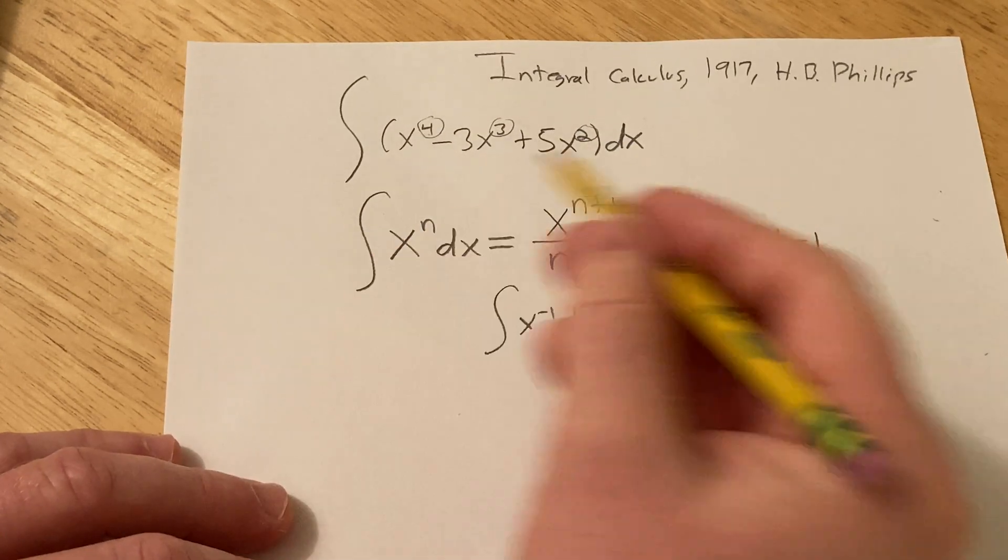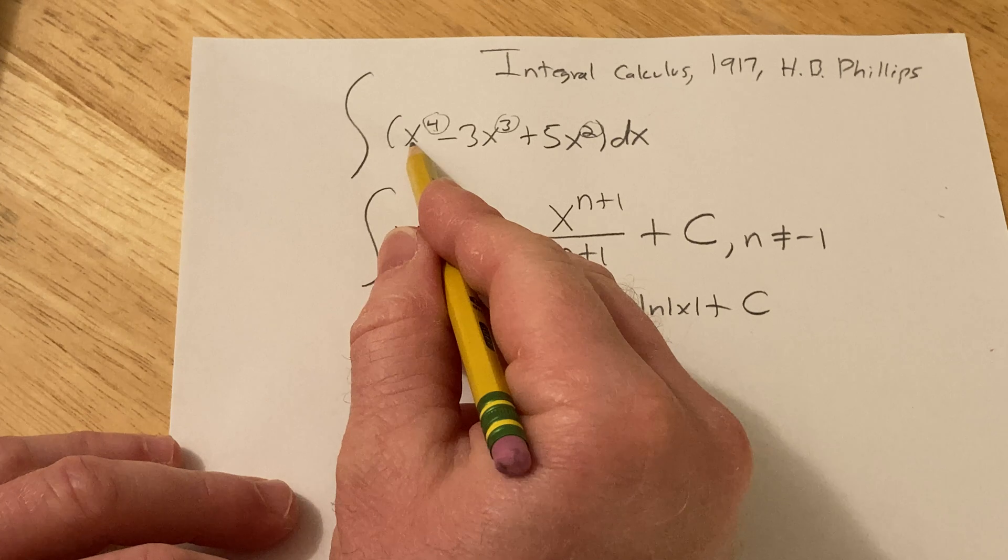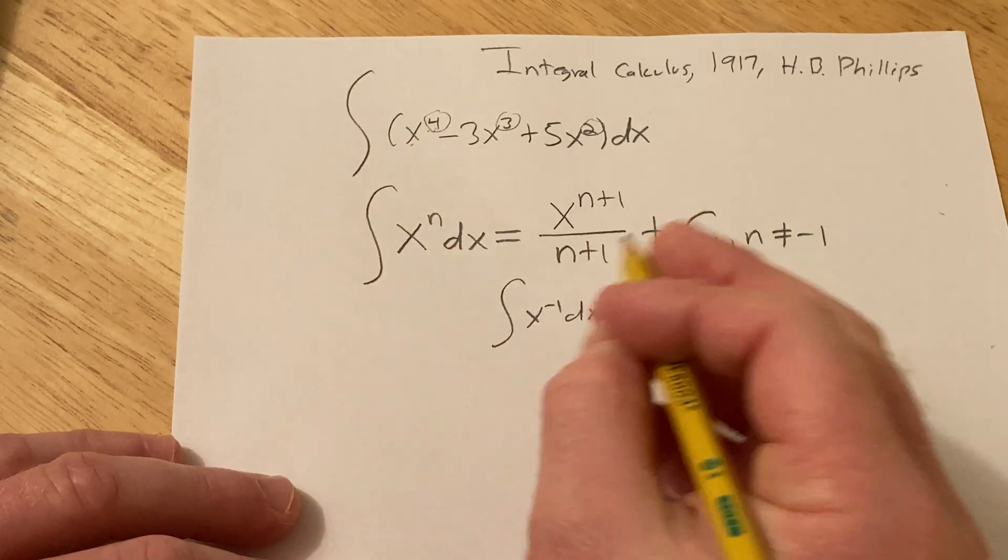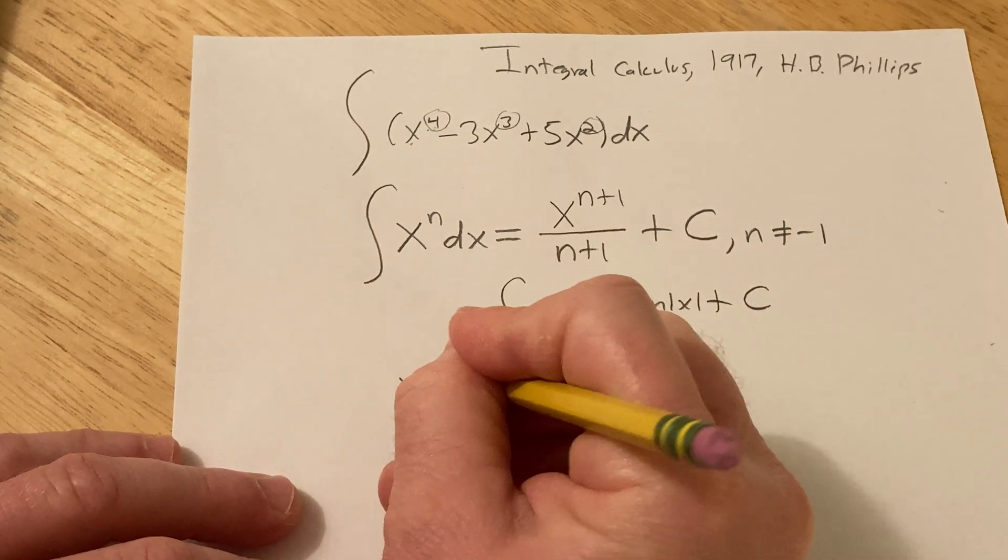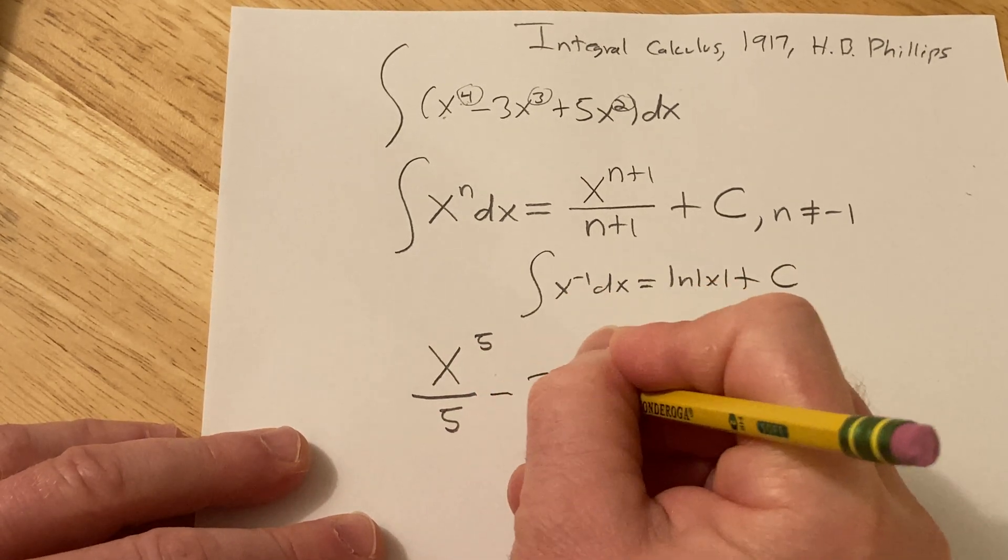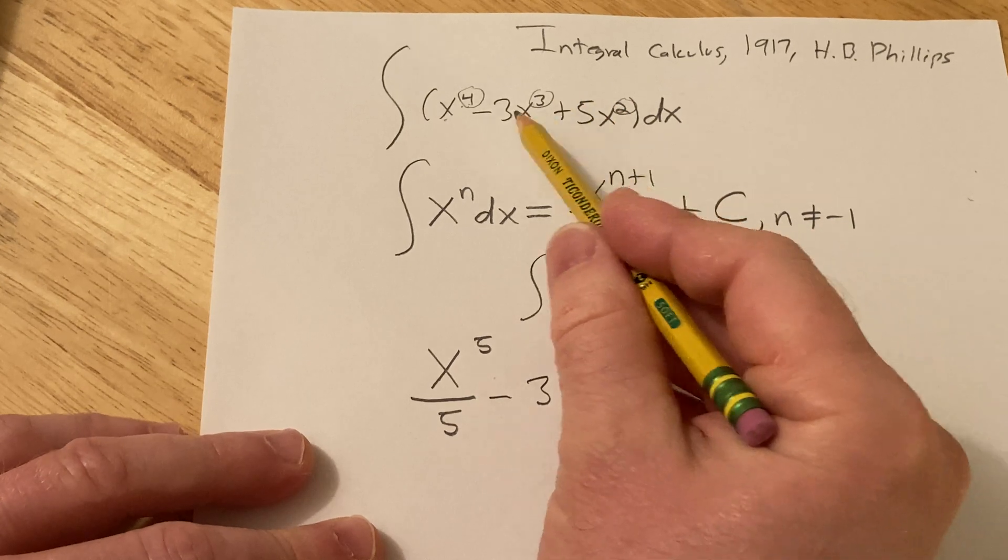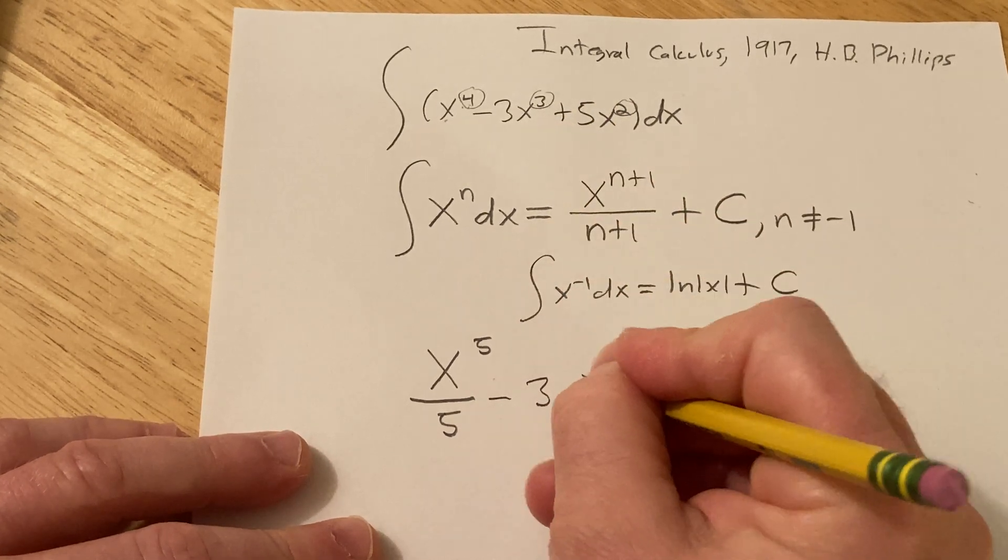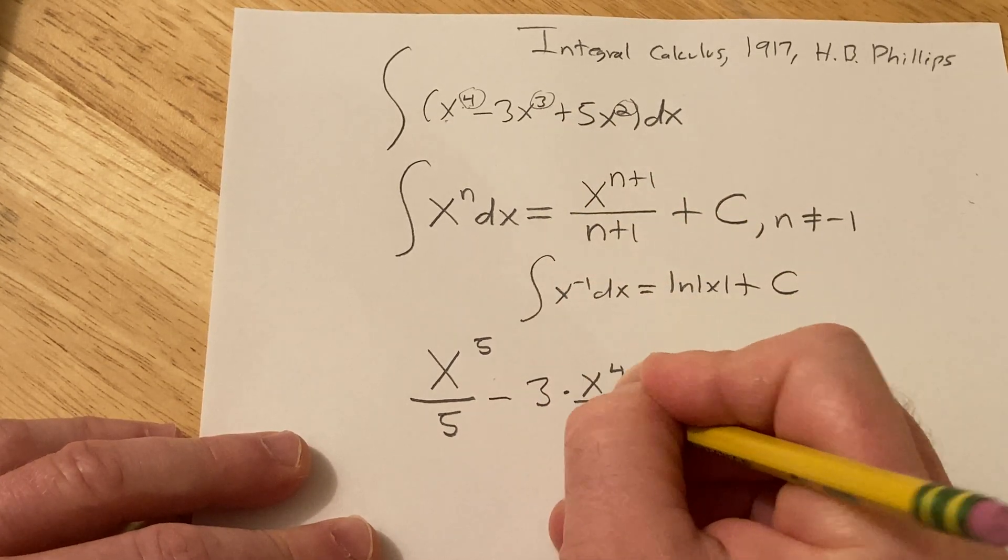Okay, so let's go ahead and do it. So for this one, it's x to the 4, so you just add 1 to the 4, so it's x to the 5, and then you divide by the 5. Minus 3 times, this one's x cubed, so you add 1, so it's x to the 4, and then you divide by 4.